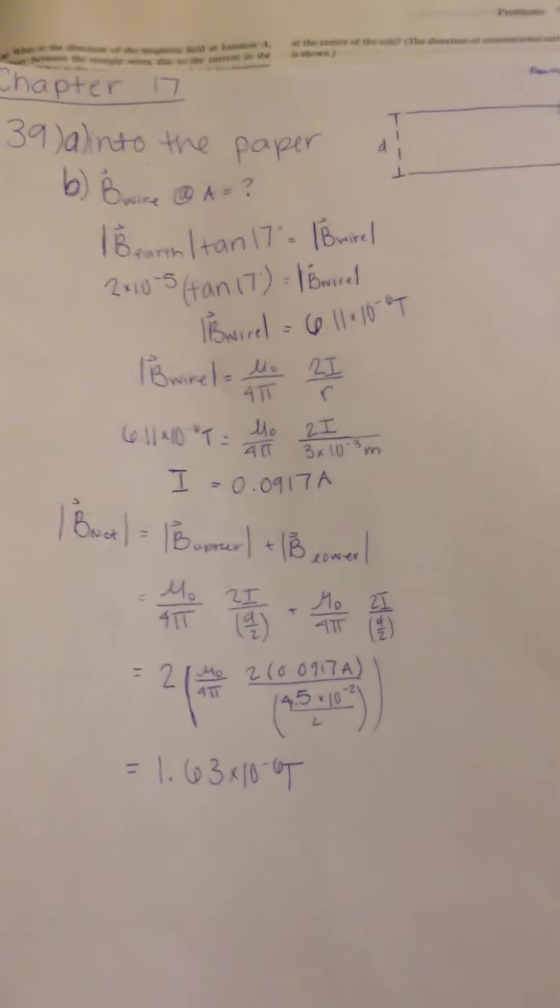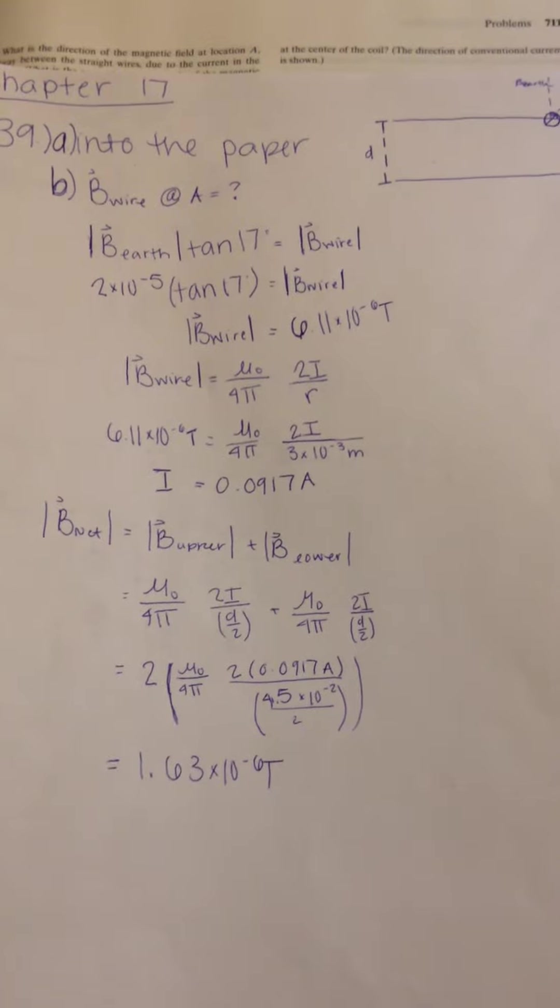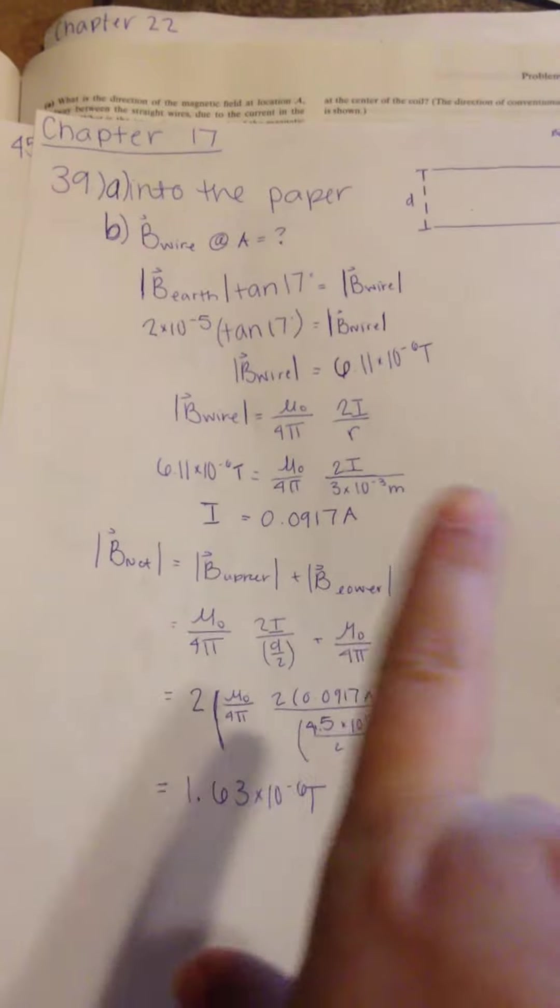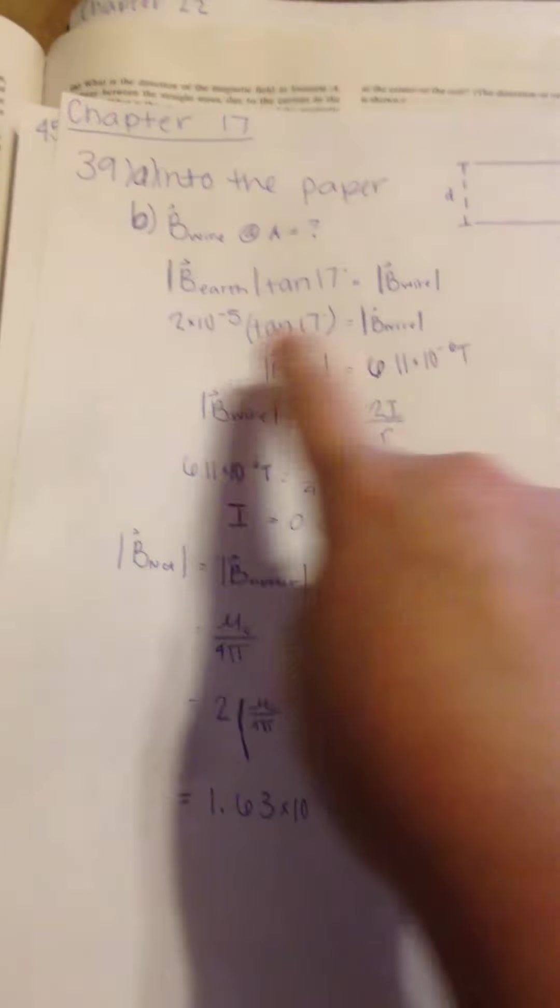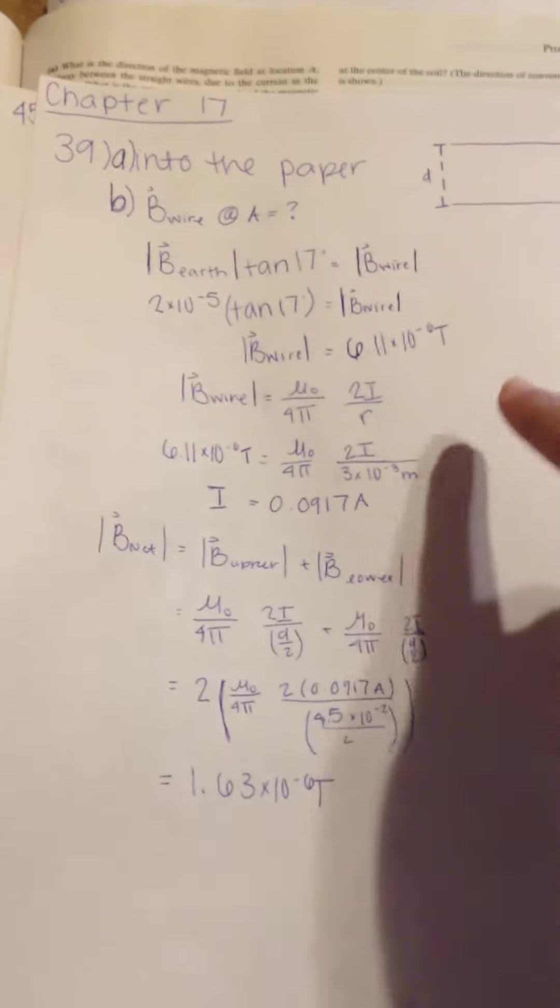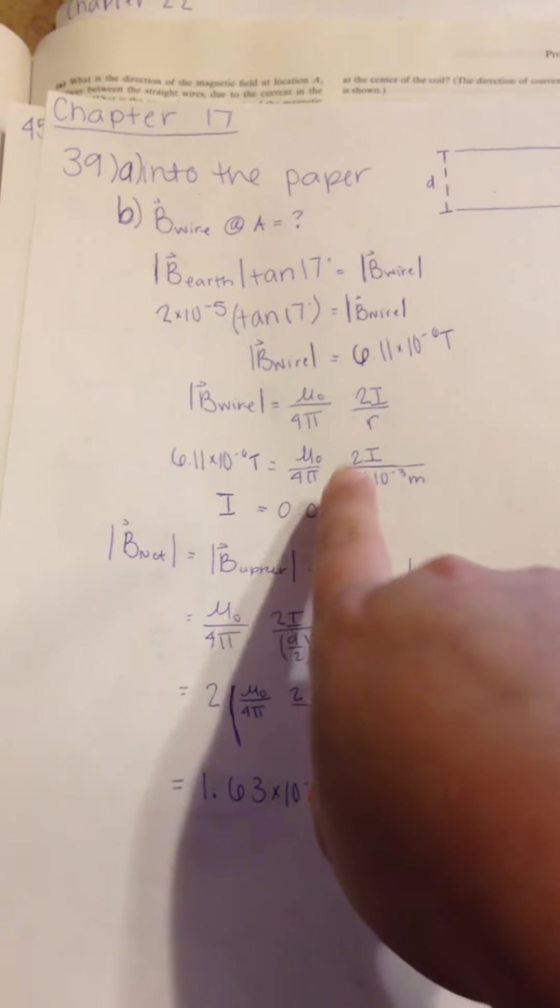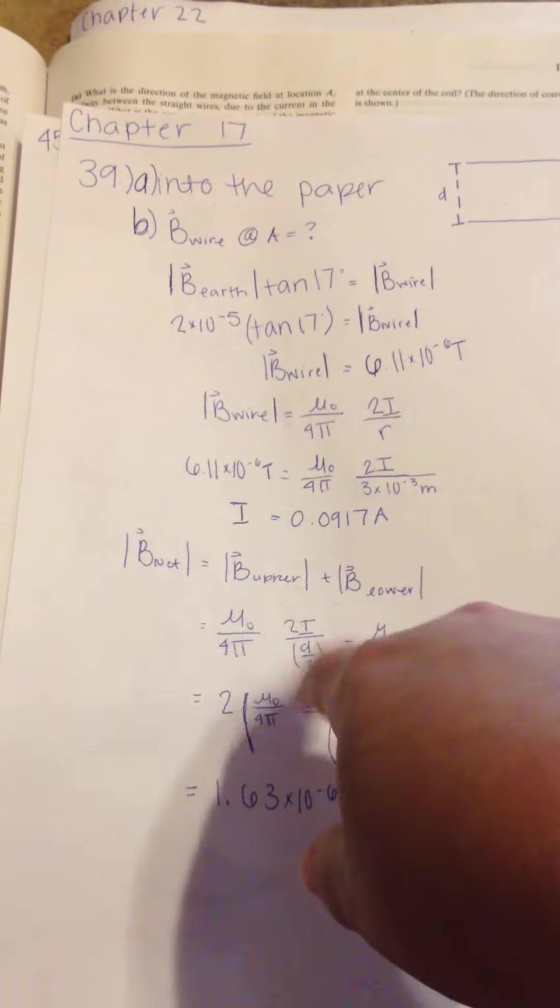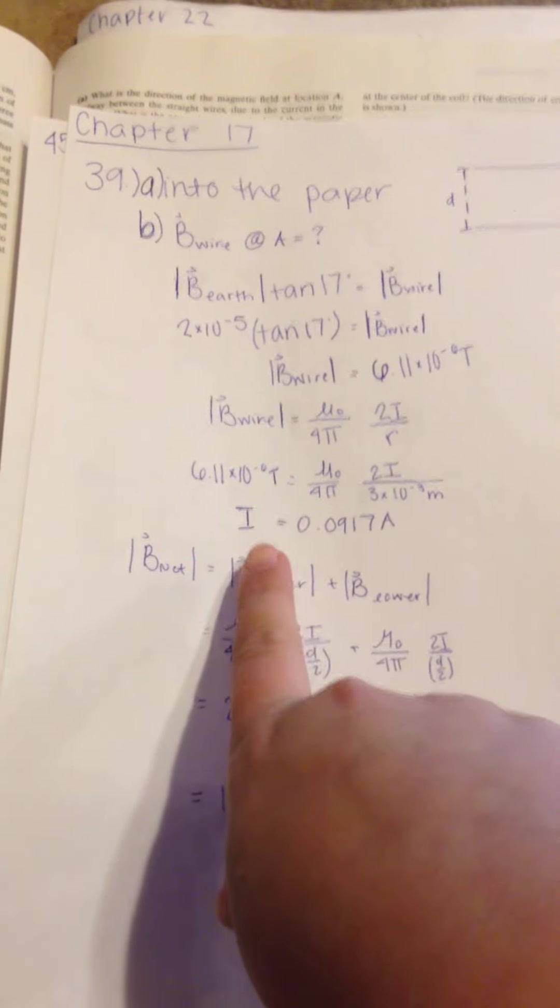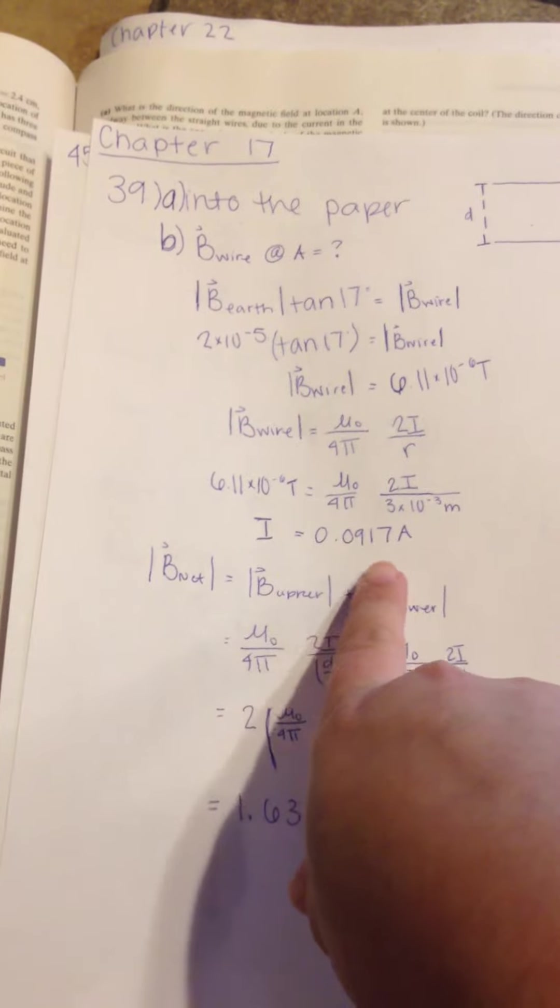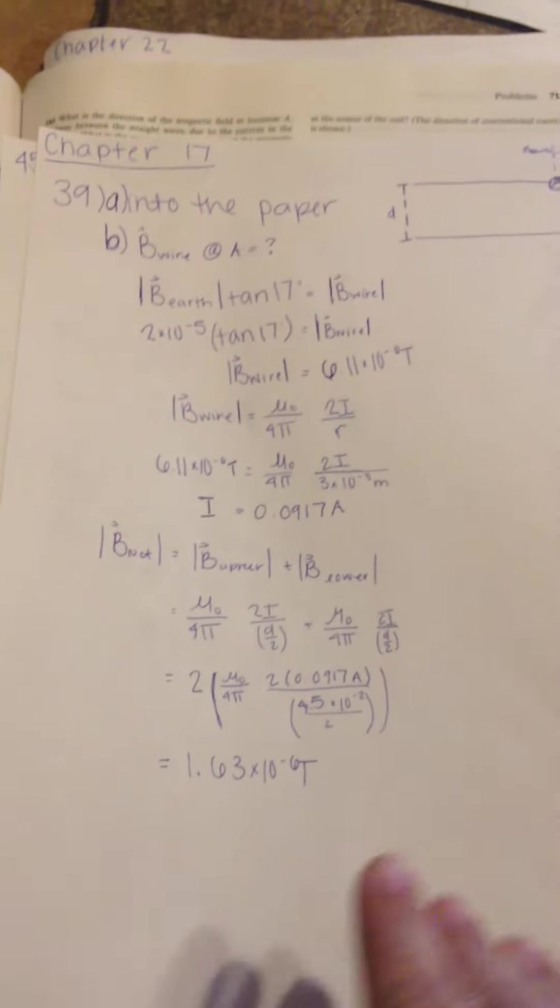And then after that, we're going to find the magnetic field due to the wire, which we have that. And then we need to solve for I in this situation, so that's what I'm doing here. Solving for I, you just multiply that out. Mu naught over 4 pi is constant. You can find that number in your textbook. That's going to give you I equals 0.0917 amps.